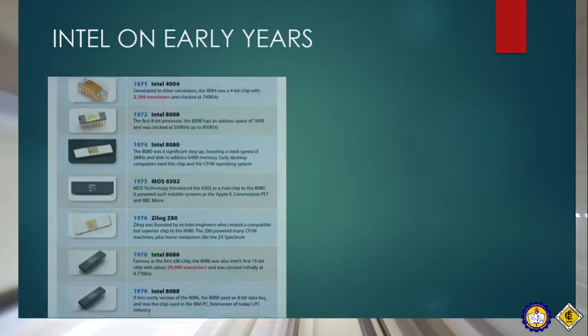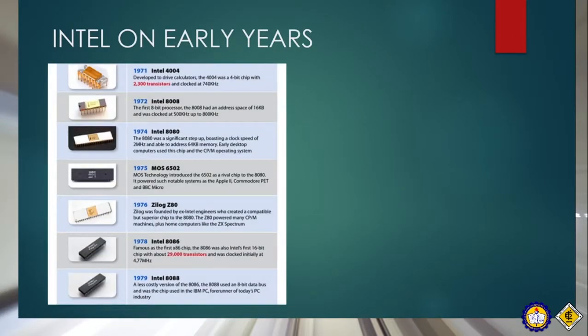This is Intel in its early years. In 1971, the Intel 4004 was developed to drive calculators. It had 2,300 transistors and clocked at 740 kHz. In 1972, the 8008, the first 8-bit processor, was made. And in 1974, the Intel 8080 was developed, boasting a clock speed of 2 MHz and able to address 64 kilobytes of memory. Early computers used this chip.